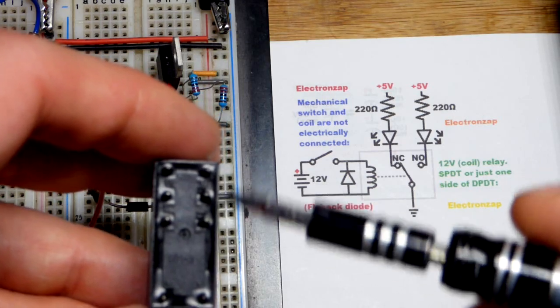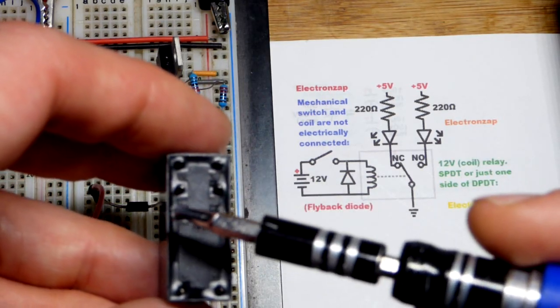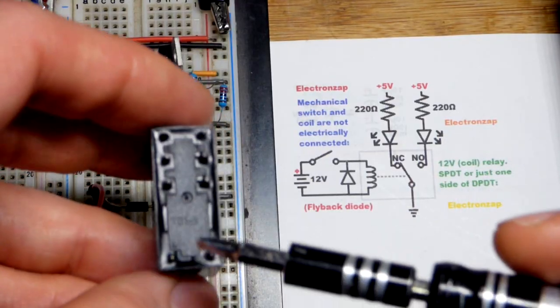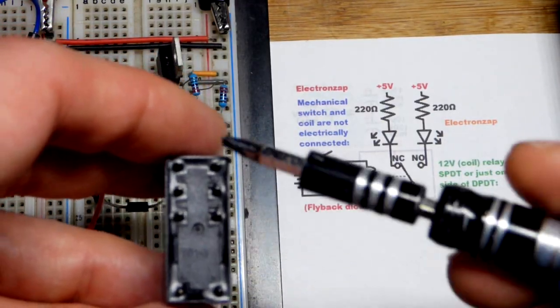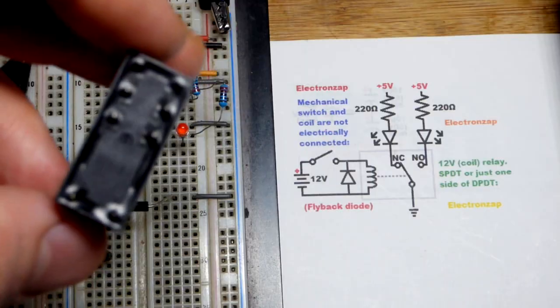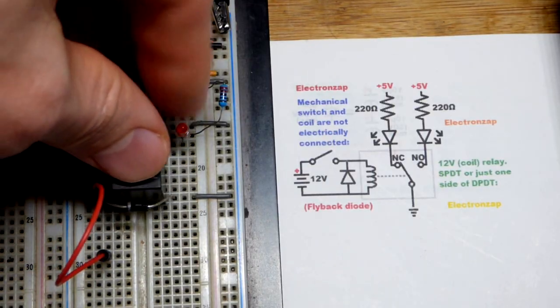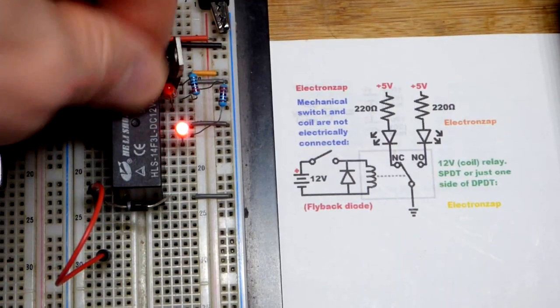We could use the other side. This side is separate from that side. None of the electricity flowing around here would flow over there if we had two circuits, but they would both switch at the same time. Be aware of that. And again, we got the diode right there.